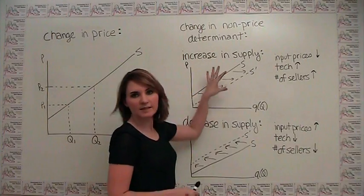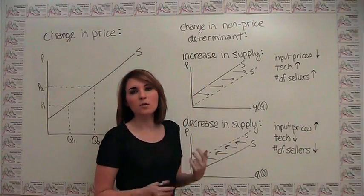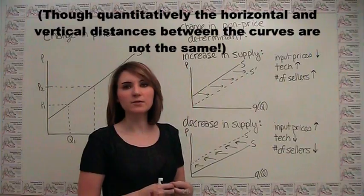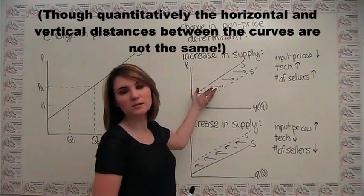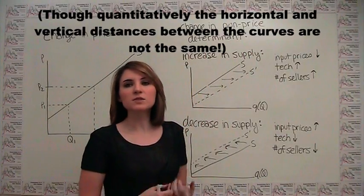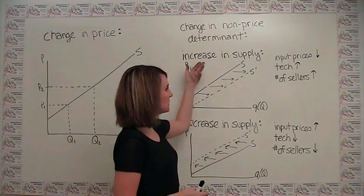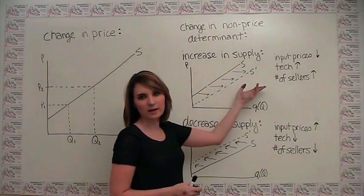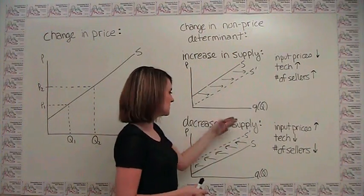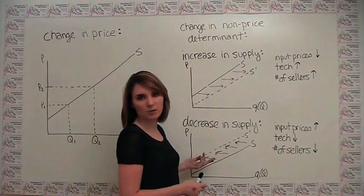Even though we can technically think about these shifts as either horizontal or vertical shifts, and sometimes it's helpful to think about the vertical distance as opposed to the horizontal distance, just for the sake of consistency, we try as much as possible to refer to an increase in supply as a shift to the right of the supply curve, and a decrease in supply as a shift to the left of the supply curve.